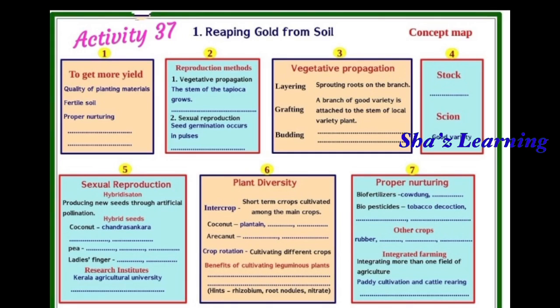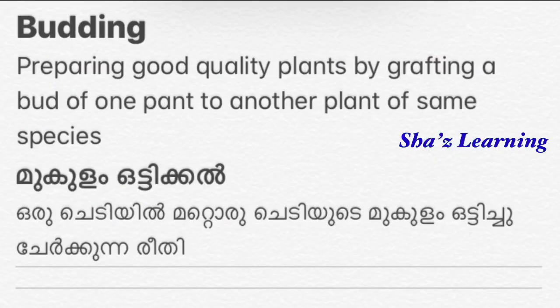Then, grafting. We will learn about grafting a stem. This involves a natural plant and a variety plant — a species that we have attached to it and added to it. That is grafting.